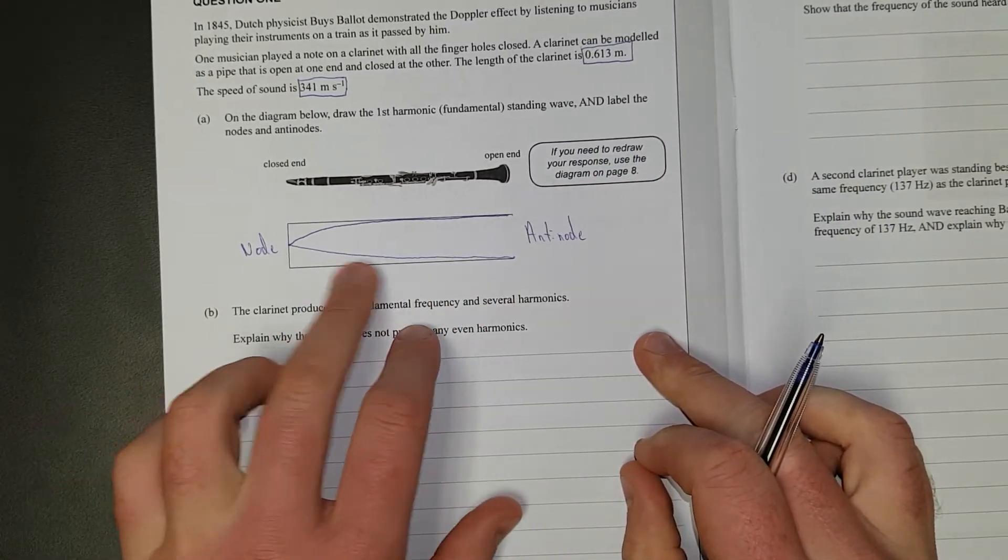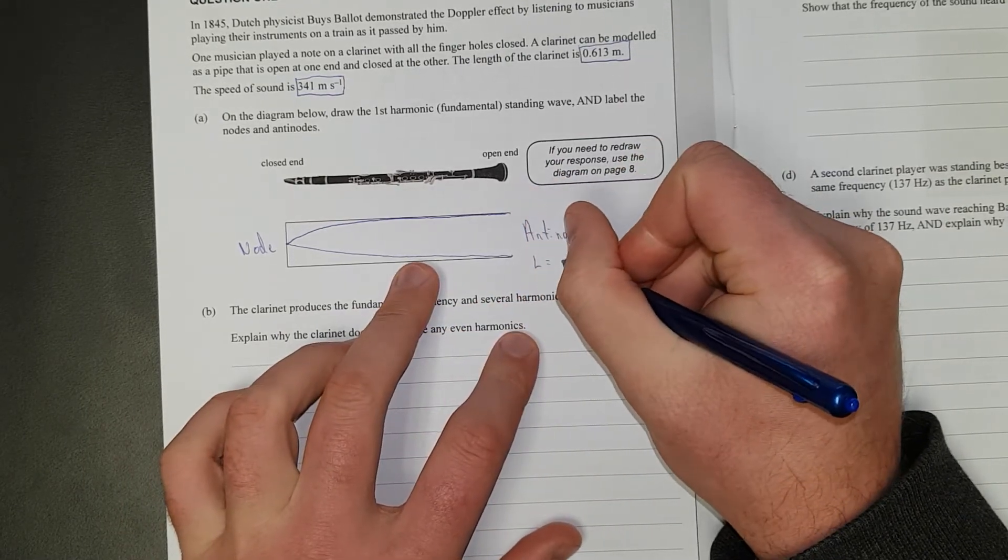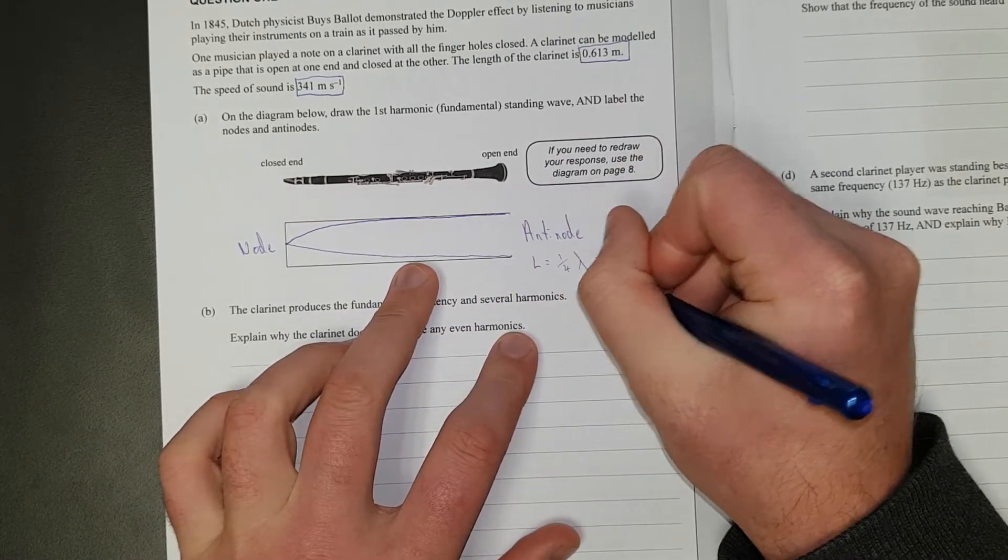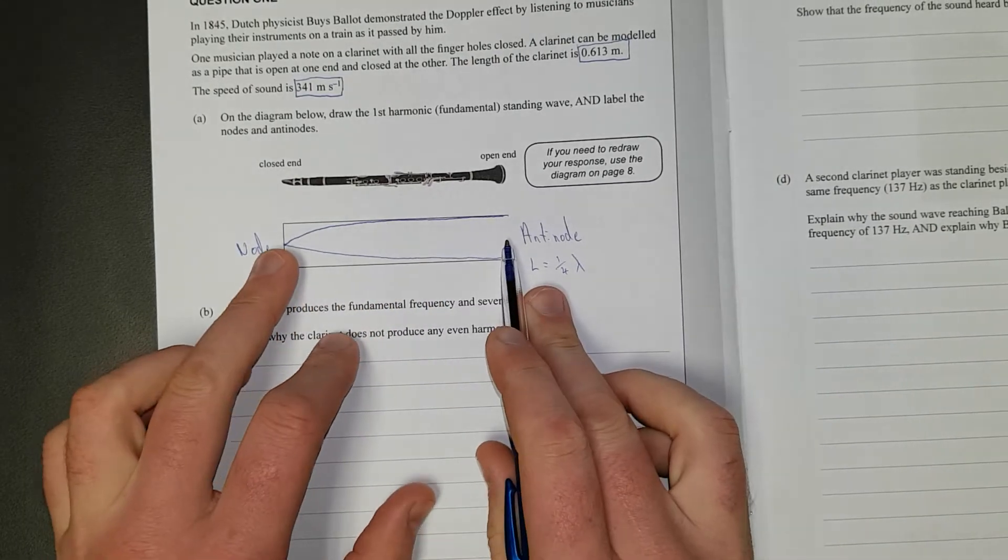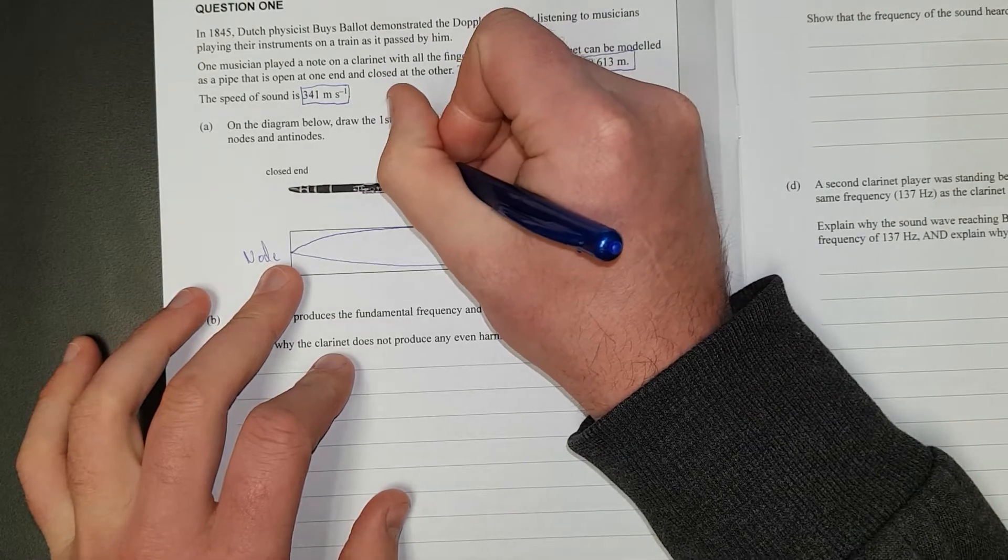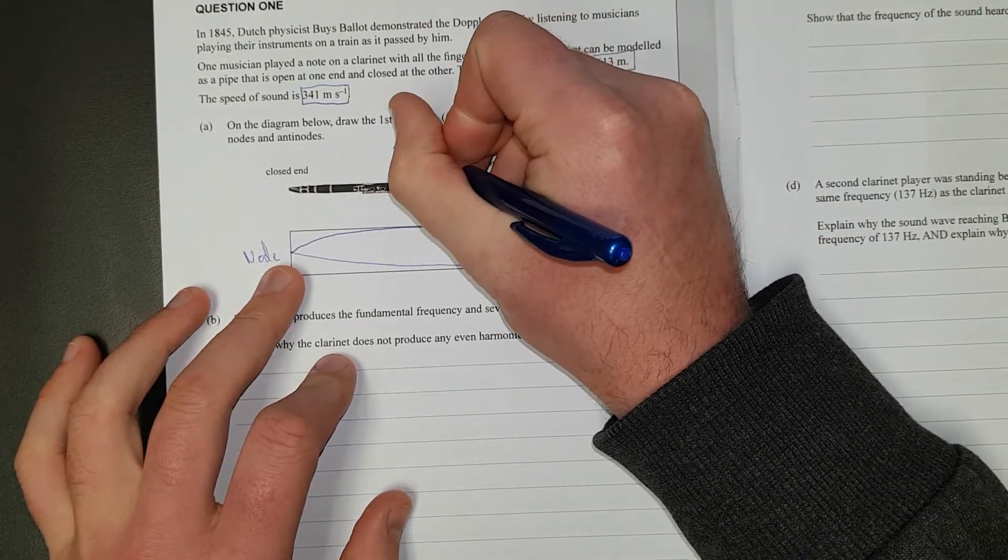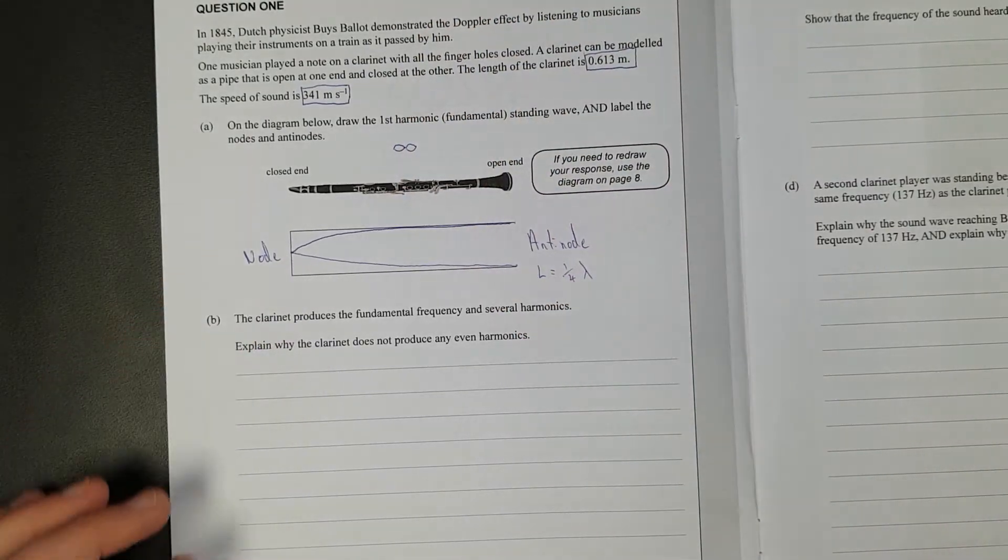And just for brevity, the length is equal to a quarter of a wavelength because that's half a wave would be one full. I'll just draw it up here. That's half a wave. This is one full wave.